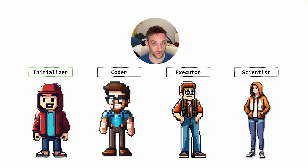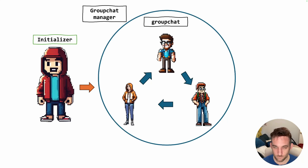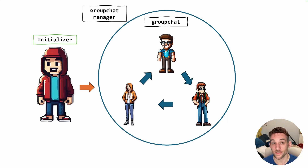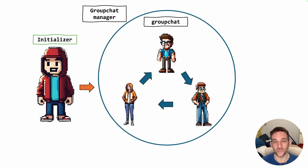Before we begin, these are the four agents I'm going to be showing you. We have the initializer and the executor, which are going to be user proxy agents, and then the coder and the scientist, which are both assistant agents. Let's first talk about what a group chat looks like. We create a group chat with three different agents, then a group chat manager, and then the initializer initiates a chat with that group chat manager, and the group chat talks among each other to produce an output.